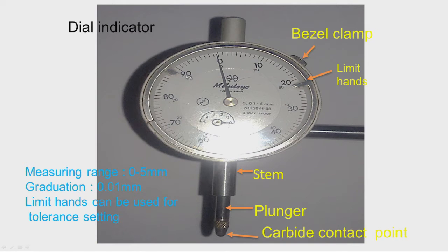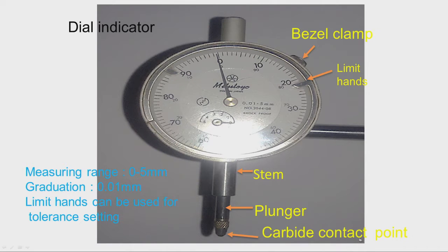The range of this measuring instrument is 0 to 5 millimeter with a resolution of 0.01 millimeter. There are limit hands that can be set for upper and lower tolerance limits. Whenever the pointer goes beyond the limits, the workpiece can be rejected. So this can be used for limit gauging, comparing the dimension of the workpiece with the nominal value. The stem, plunger, and carbide contact point are visible, and most parts are made of high strength stainless steel for rigidity.